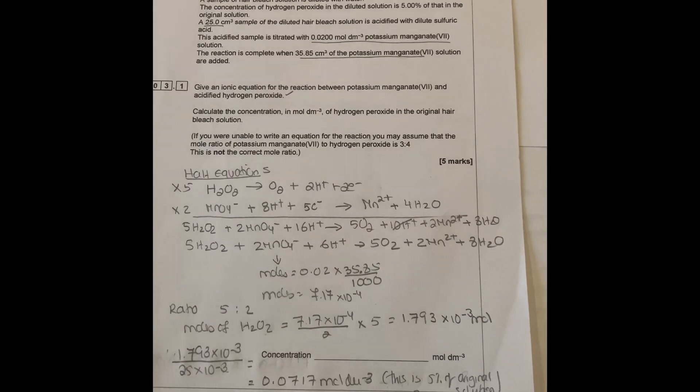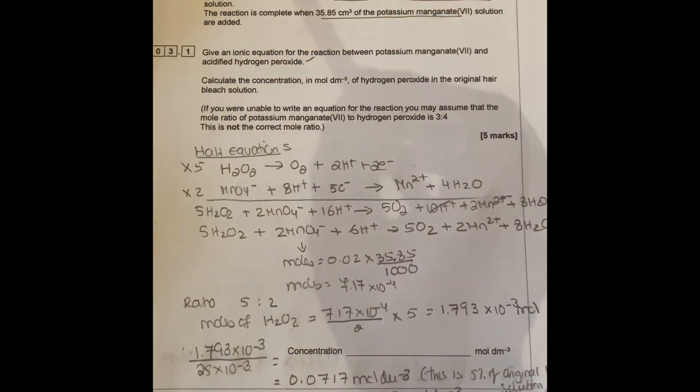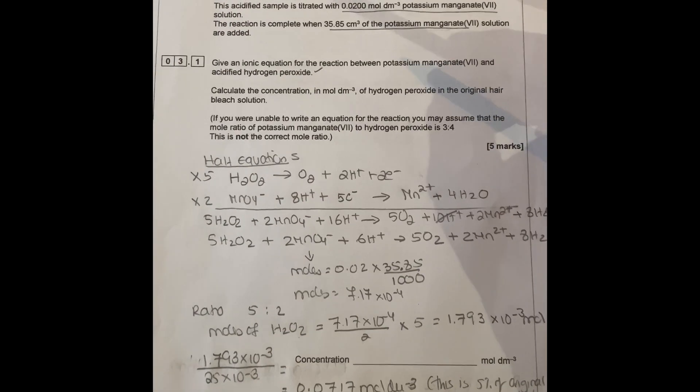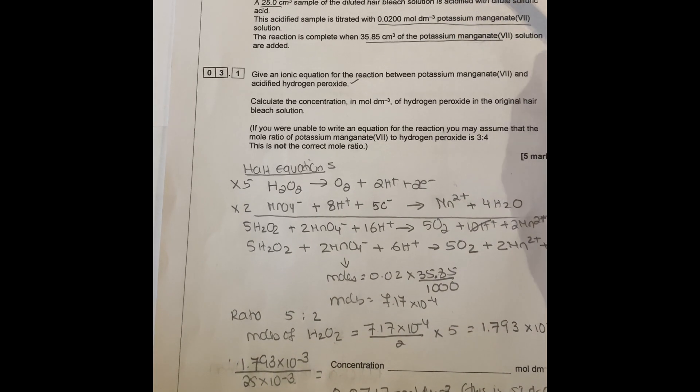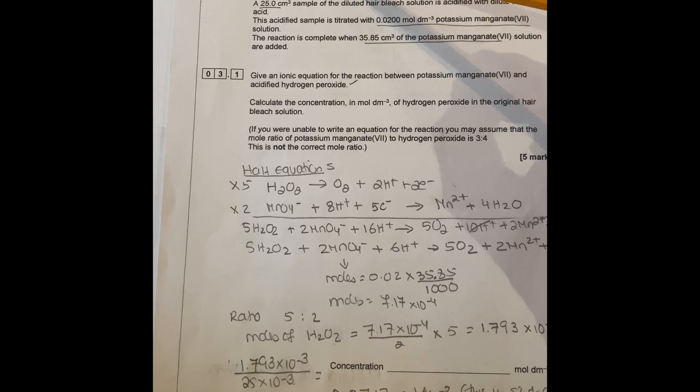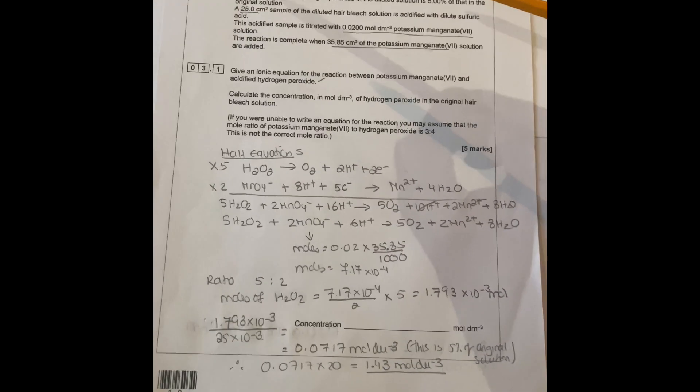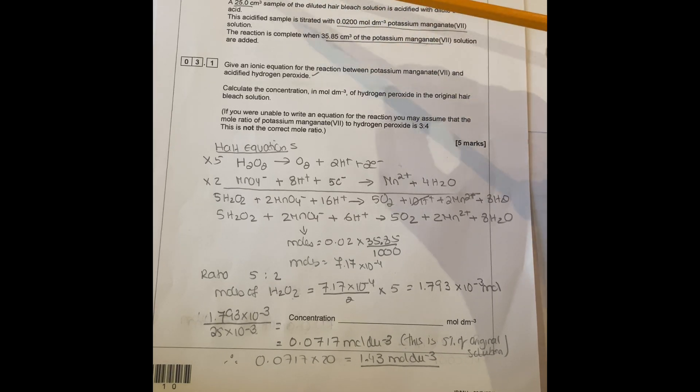Right, now we're going to do question number three from the same paper 2022. This question is about hydrogen peroxide half equations. This is your half equation. Hair bleach contains hydrogen peroxide.